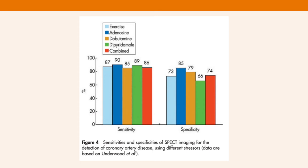Looking at the sensitivity and specificity of SPECT imaging for detection of chronic coronary artery disease using different stressors, you can see why exercise testing has fallen out of favour. Using exercise as a stressor, sensitivity is reasonable at about 87%, but specificity falls to 73%. Dobutamine stress echo gives sensitivity of 85% and specificity of 79%. The most superior is adenosine as a stressor, giving a sensitivity of 90% and the best specificity of 85%.